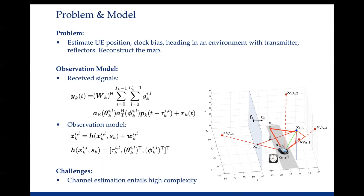This is what the signal looks like at the user side. This is the typical millimeter wave observation model in the literature. The transmitted signal is sent by the base station, and each channel path is described as a channel gain, a response vector at the receiver side which depends on the angles of arrival, a response vector at the transmitter side which depends on the angles of departure, and the delay. At the receiver side, you can have a combiner which makes the receiver listen in a certain direction.